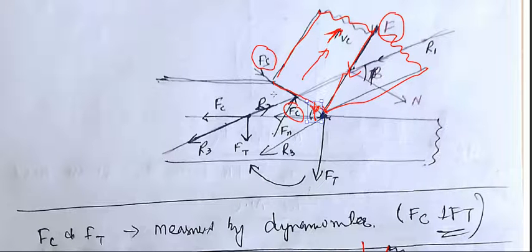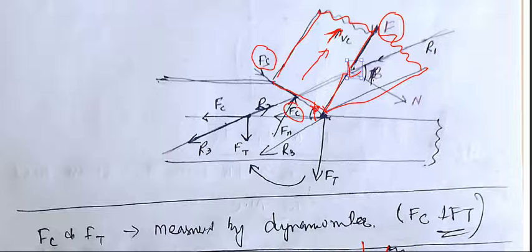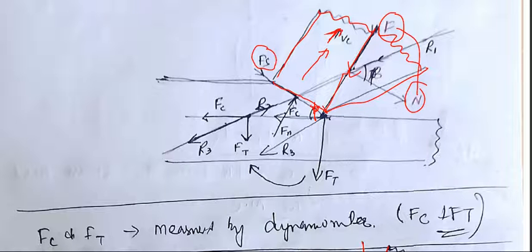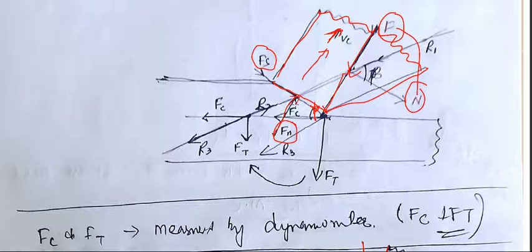For every force, we take the normal perpendicular. If you consider the frictional force, we take the normal force, that is the perpendicular, that is N. So here we have two forces: the shear force and the normal force N.